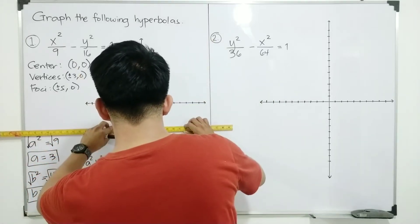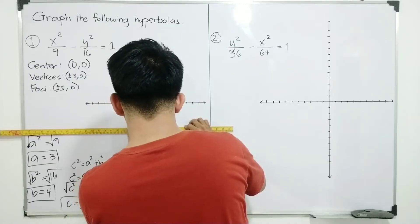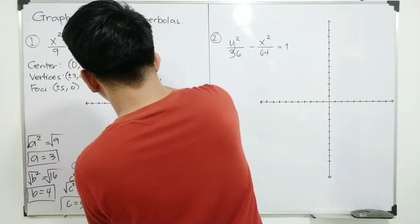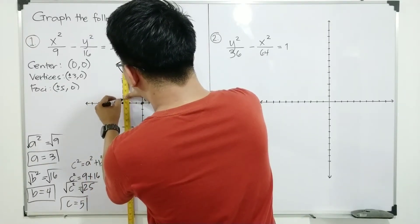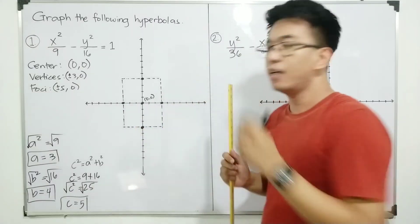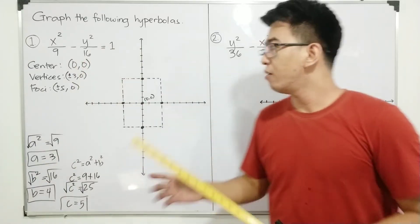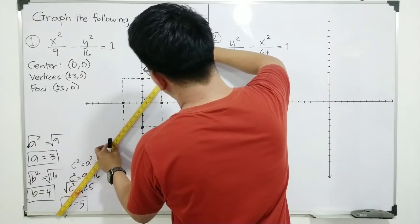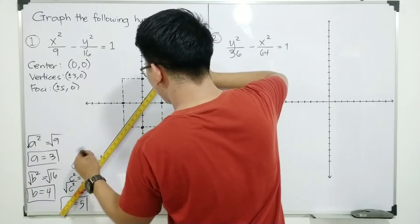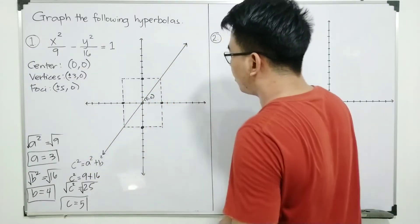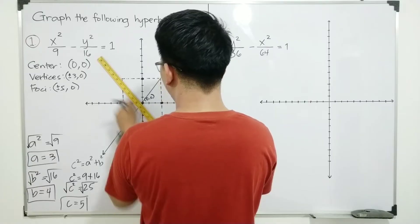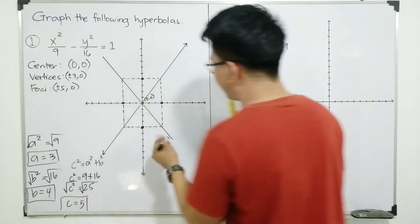After drawing the rectangle, we draw the diagonals using the corners of the rectangle and extend them — these will serve as our asymptotes. And for the second asymptote, we draw the other diagonal and extend it as well. The asymptotes are now drawn.